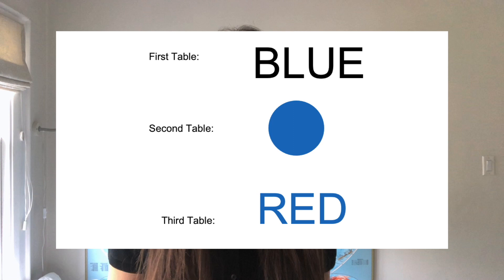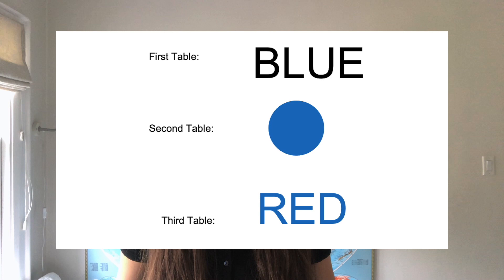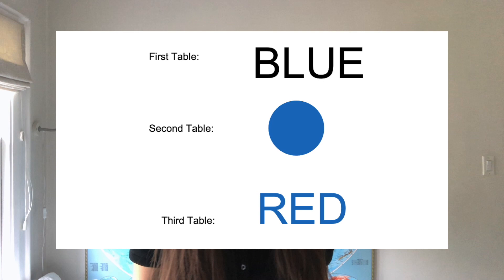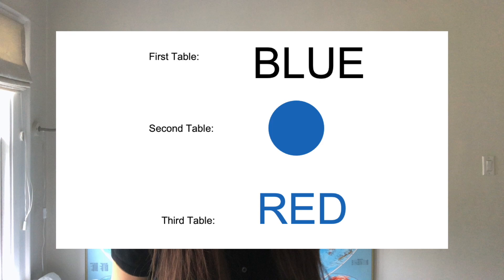In the incongruent condition, participants had to inhibit the cognitive interference that occurs from performing the less automated task of naming the ink color instead of the more automated task of reading the word. Stroop then calculated the number of items correctly named in a specific amount of time. Speed and accuracy are the typical dependent variables for this test, and there are many different scoring methods that have been proposed over time — some score solely on speed of performance while others measure both accuracy and speed.